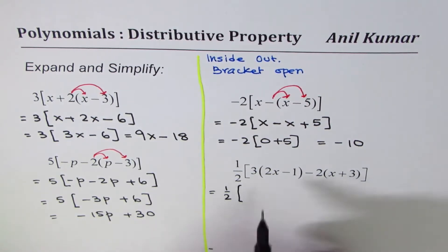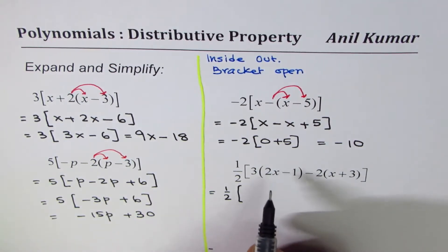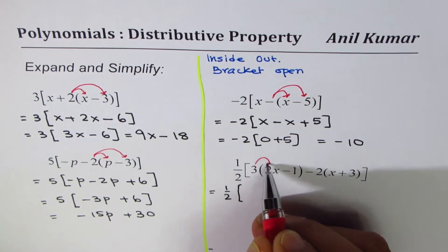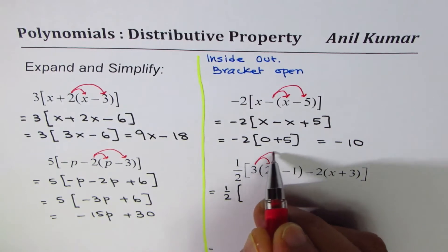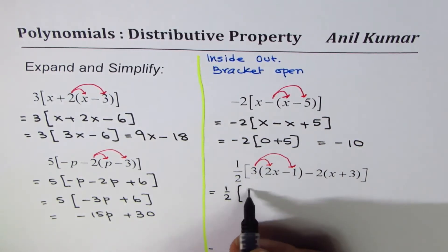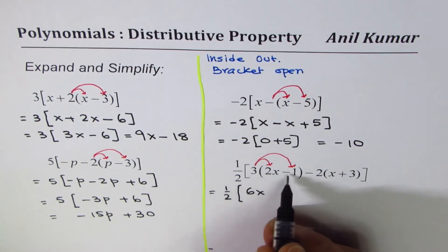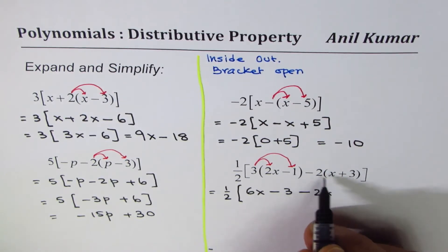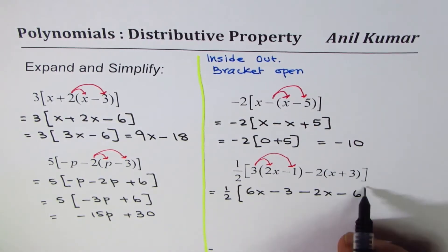So this time we are going to open these two brackets with distributive property. Multiply by 3 both the terms in the first bracket: 3 times 2x will give us 6x minus 3. Now here we have minus 2 times x as minus 2x, minus 2 times plus 3 is minus 6.